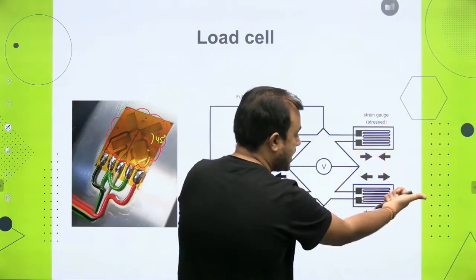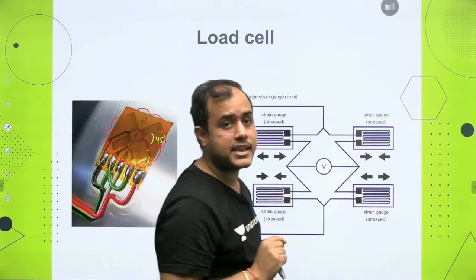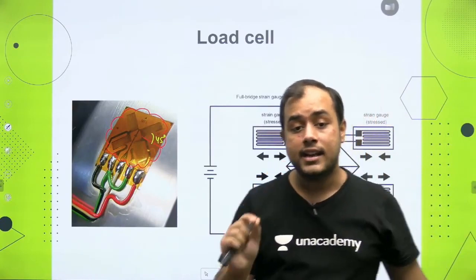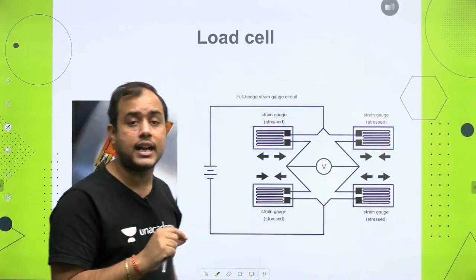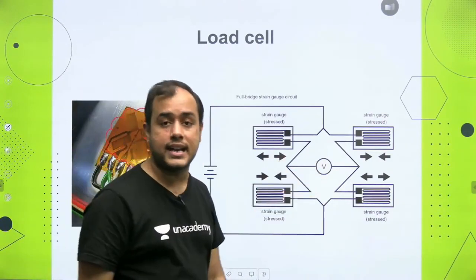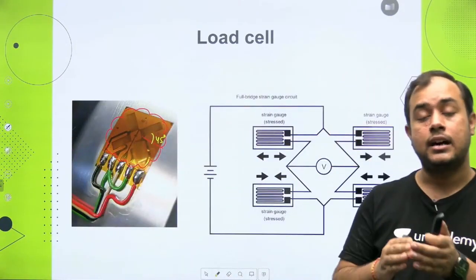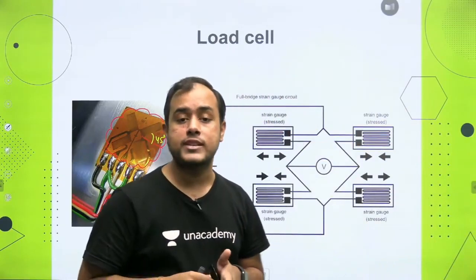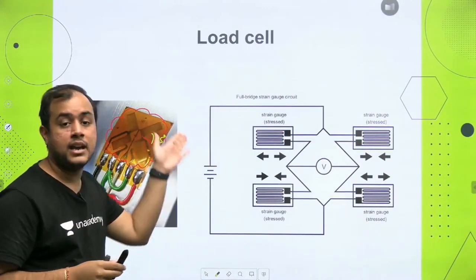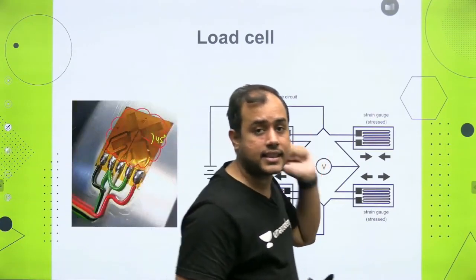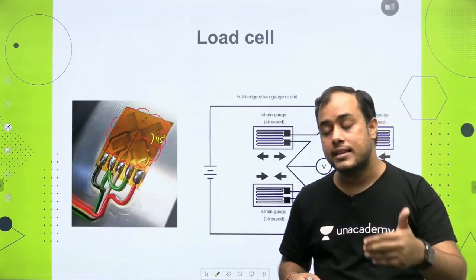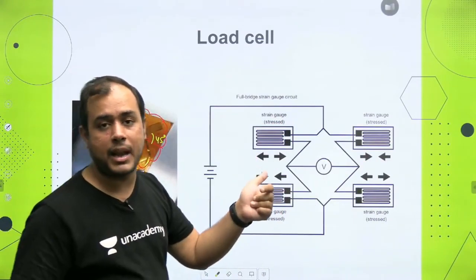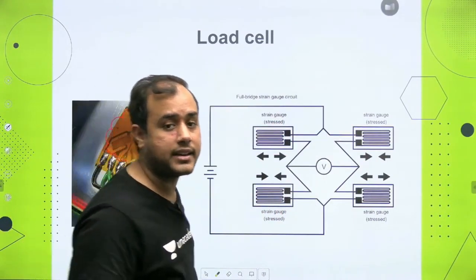These gauges are connected in such a way that if one is being stretched, another is being compressed. As soon as weight is placed on them, their resistance changes. This resistance change makes the Wheatstone bridge unbalanced, and that gives a voltage as the output. So first, pressure was used to change the resistance, but that is not an electrical output. To convert it to electrical output, a battery is connected, which converts the resistance change into a voltage.